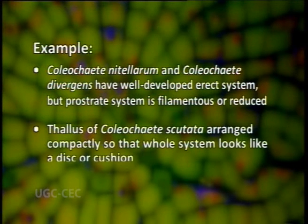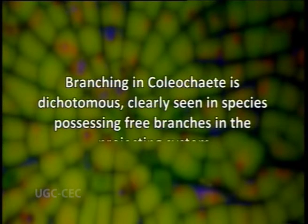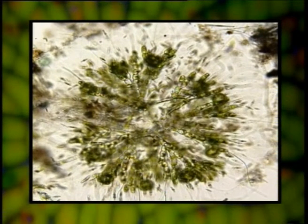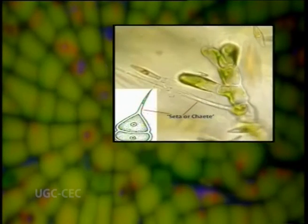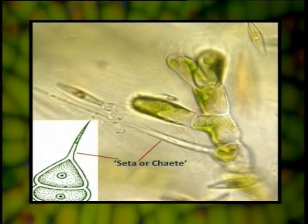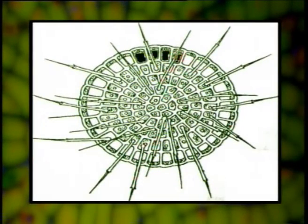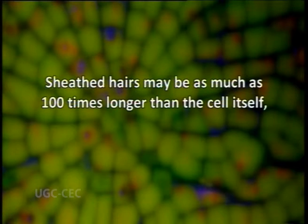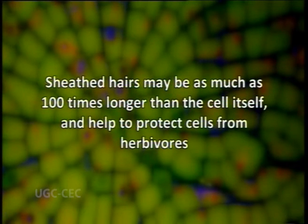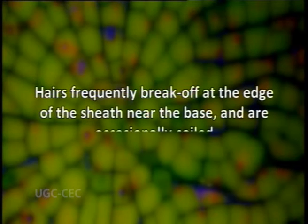The thallus of Coleochaete scutata is arranged so compactly that the whole system looks like a disk or cushion. The branching in Coleochaete is mostly dichotomous, which can be clearly seen in species possessing free-branching projecting systems as in Coleochaete pulvinata. The thallus of Coleochaete scutata is usually surrounded by a gelatinous envelope. Some cells possess pointed setae or chaetae, which are prolongations of the cell wall, and their base is usually surrounded by gelatinous material. These sheathed hairs may be as much as 100 times the cell size and help protect the cell from herbivores.